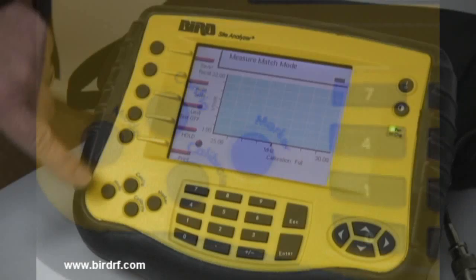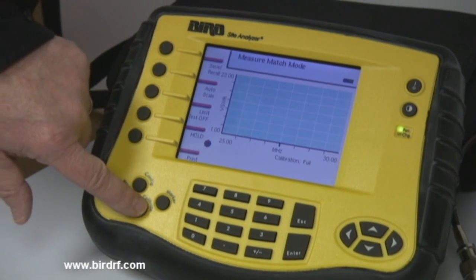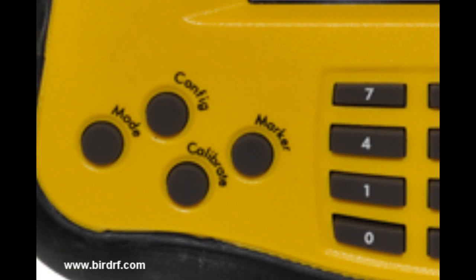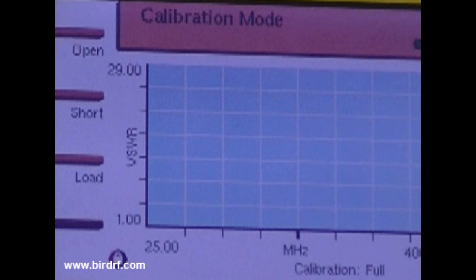Let's start the calibration process. Step one is to press the calibrate button which is located in the left hand corner of the sight analyzer. Once you have done this your sight analyzer screen will switch to the calibration mode.